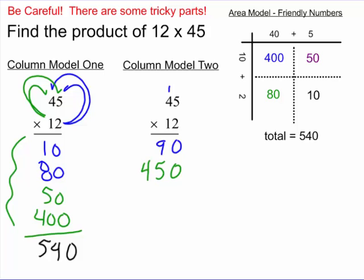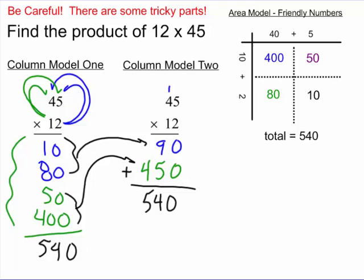If I add those together, I get 540. And you should notice that, hey look, there's the two numbers I got from column model number one. But it is a little shorter, a little less to write.